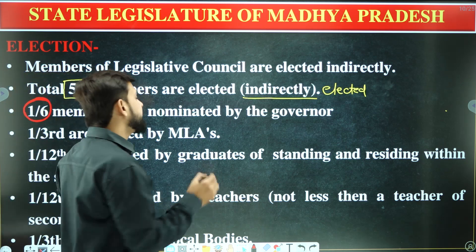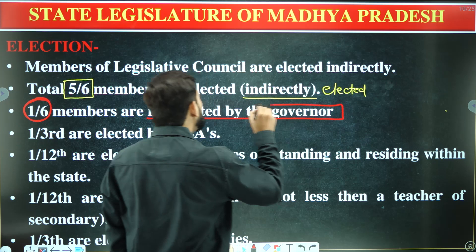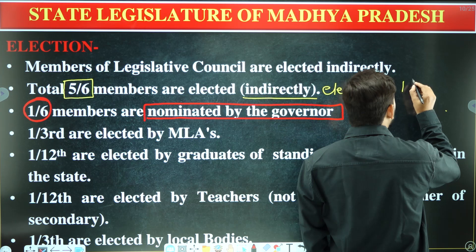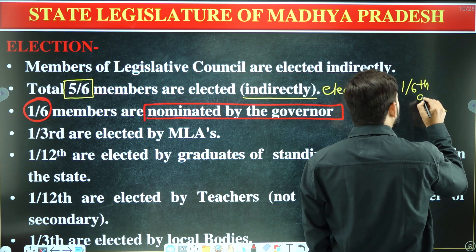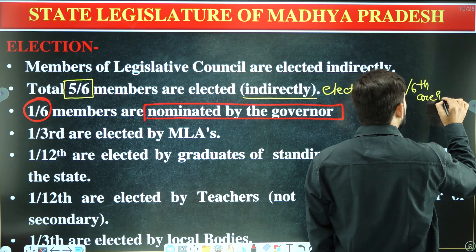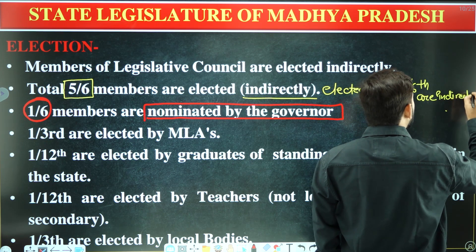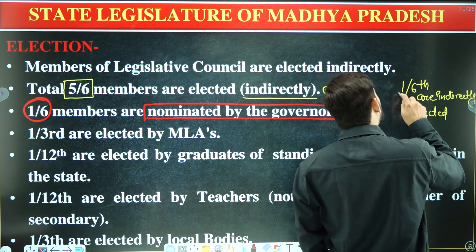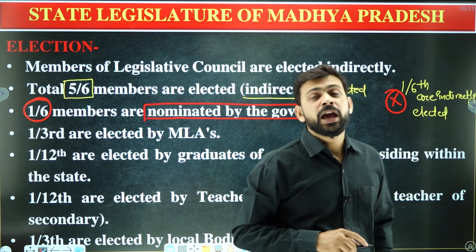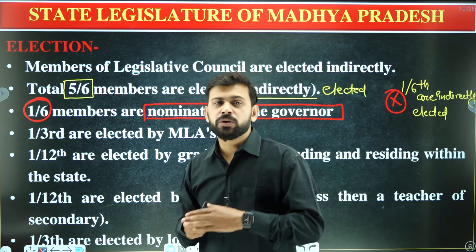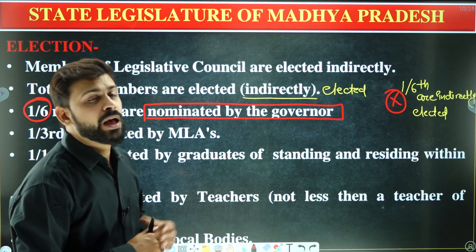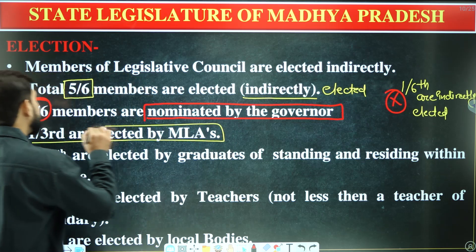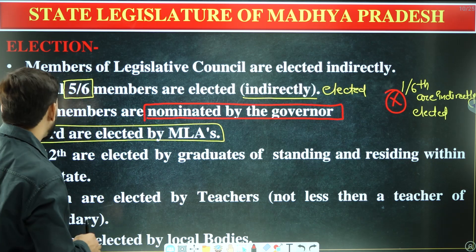One-sixth of the members are nominated by the Governor — remember this important point. If a question comes saying one-sixth are elected indirectly, mark that as wrong, because one-sixth are nominated, not indirectly elected.